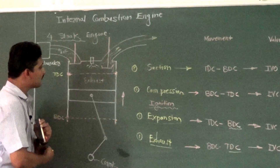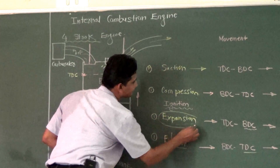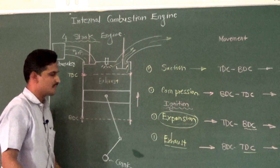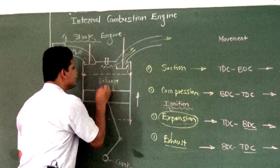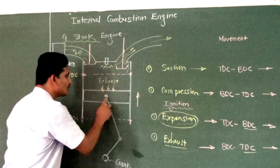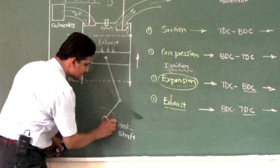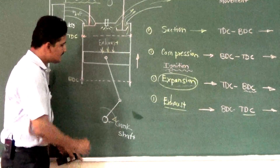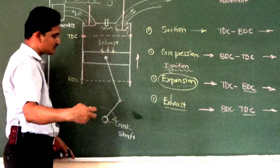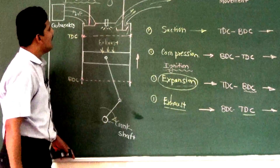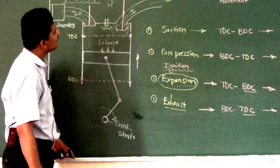In this complete cycle, power is generated in the expansion process. The pressure available on the piston transfers to the crankshaft through the connecting rod. When the piston moves downward, force is exerted on the crank, the shaft starts rotating, and this rotational power can be extracted and given to a particular application.